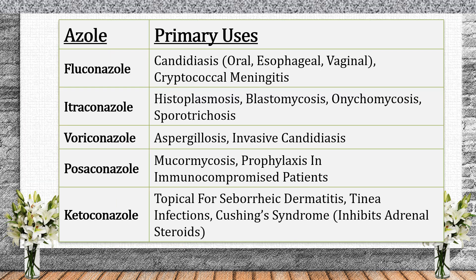Key clinical uses of azole antifungals: fluconazole is the drug of choice for candidiasis but does not cover aspergillus. Itraconazole is preferred for endemic fungal infections such as histoplasma and blastomyces. Voriconazole is the first-line treatment for invasive aspergillosis. Posaconazole is used for mucormycosis and prophylaxis in high-risk immunocompromised patients.